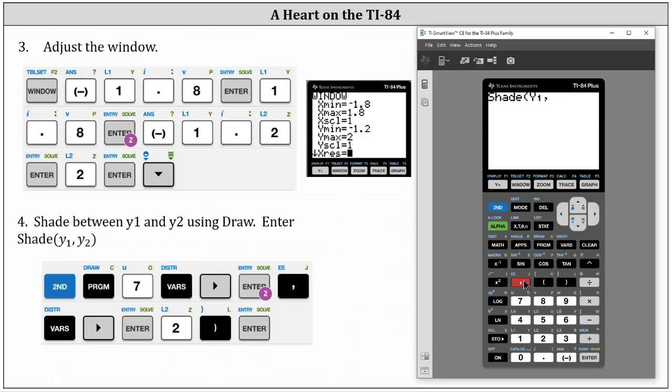Comma, which is above the seven. And now we need to enter y2 by pressing vars, right arrow, enter, and then number two for y2, close parenthesis, and enter.